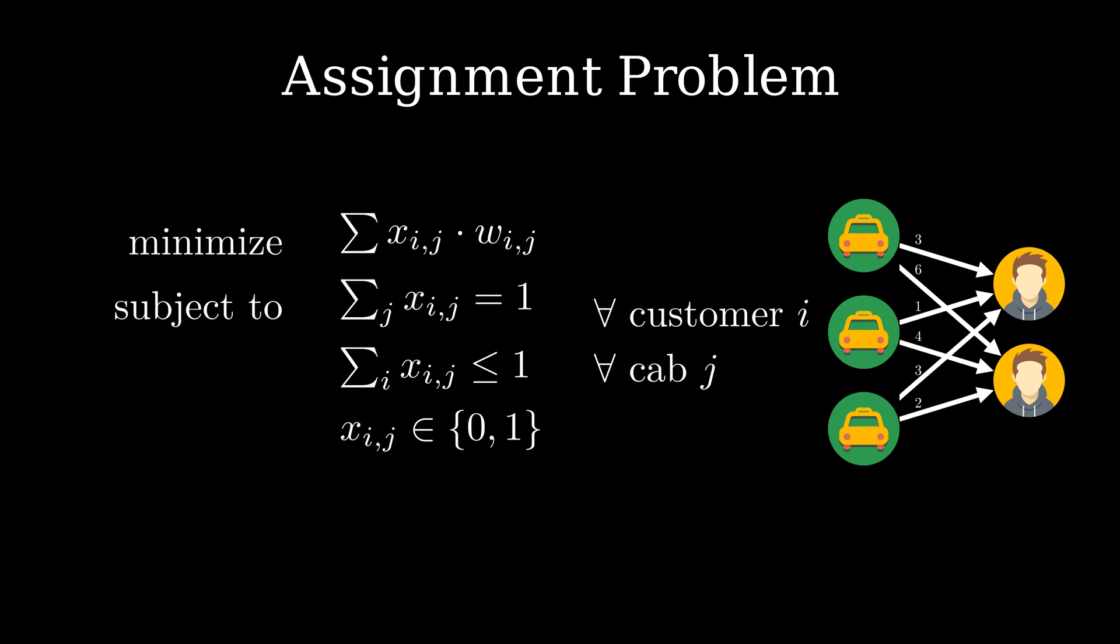This is one possible solution. We introduce an indicator variable for each arrow between a customer i and a cab j. This encodes if cab j will pick up customer i. Each cab can pick up at most one passenger, therefore the sum of all outgoing arrows can be at most one. Each passenger must be picked up by one cab, so the sum of all incoming arrows must be exactly one. The total travel time is then equal to the sum of the times it takes for the cab to get to the passenger multiplied with the corresponding indicator variable. This describes the objective and completes our ILP.